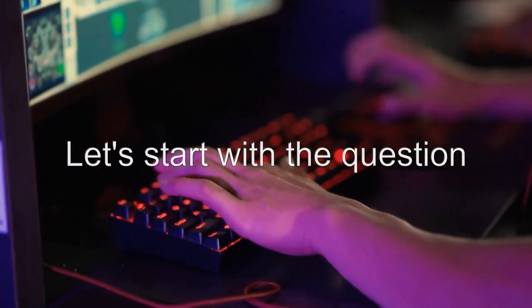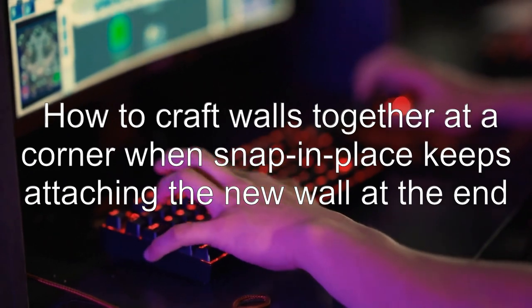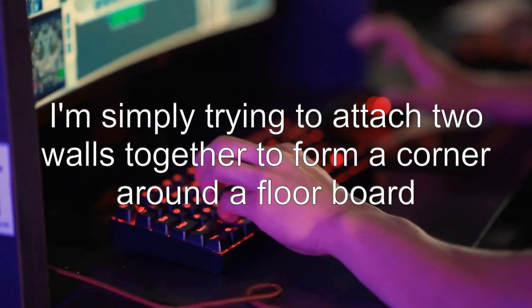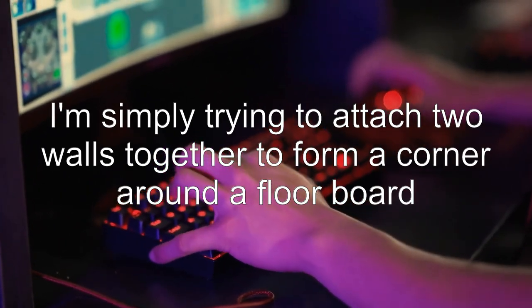Let's start with the question. How to craft walls together at a corner when snap in place keeps attaching the new wall at the end? I'm simply trying to attach two walls together to form a corner around a floorboard.